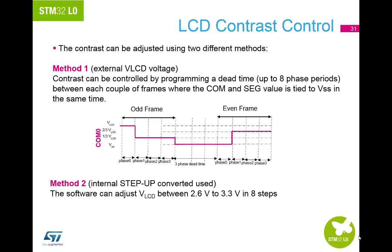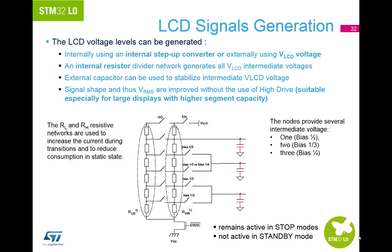When an external power source is selected, the VLCD voltage must be chosen from a specific range in the datasheet, and contrast can be controlled by programming a dead time between frames. When the step-up converter is selected as the source, the VLCD value can be chosen from a wide set of values via contrast control bits in one of the registers; new values take effect at the beginning of a new frame. Internal resistor networks are used to generate all VLCD intermediate voltages — one with low value resistors to increase current during transitions, and one with high value resistors to reduce power consumption in the static state. Devices with VLCD rails offer the possibility to connect internal VLCD rails to optional capacitors to improve decoupling capabilities.